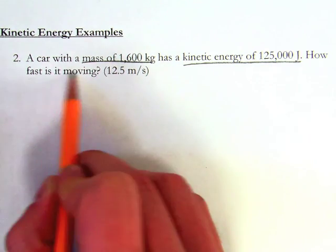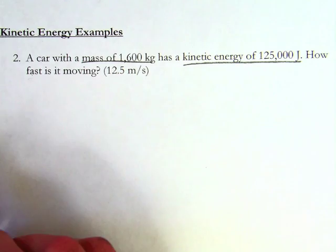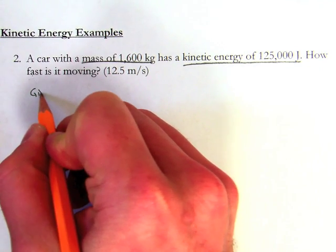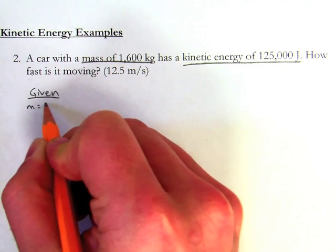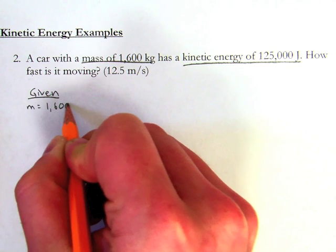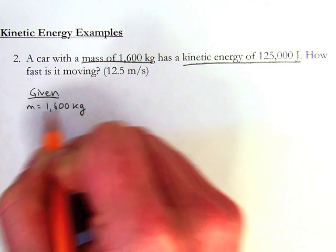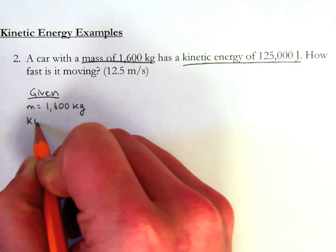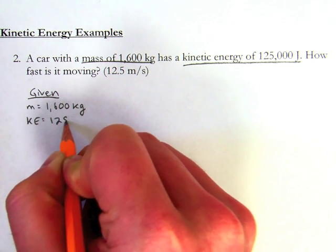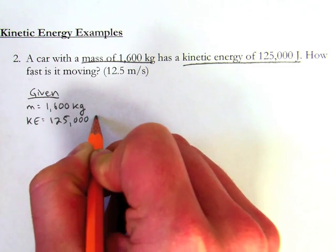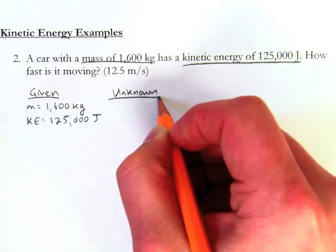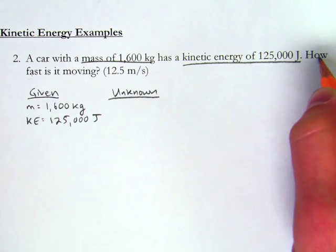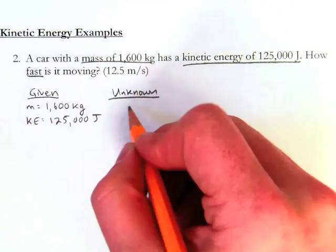So how fast, that's going to be velocity. So I know I'm given the mass, which is 1,600 kilograms. The kinetic energy is 125,000 joules. And my unknown, this time, is going to be how fast, so I'm going to be looking for velocity.